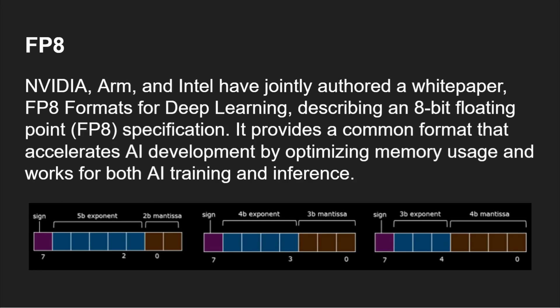One final thing: there is also FP8. We were talking about FP32, FP64, then the 79-80 bit version, and even bigger — but there's also FP8. Nvidia, ARM, and Intel have jointly authored a white paper called 'FP8 Formats for Deep Learning,' describing an 8-bit floating point specification. It provides a common format, accelerates AI development by optimizing memory usage, and works for both AI training and inference. It turns out that even with this lower precision, it works well for the weights inside neural networks. There are three versions: a five-bit exponent, a four-bit exponent, and a three-bit exponent variant, being used to squeeze huge neural networks into smaller amounts of memory.